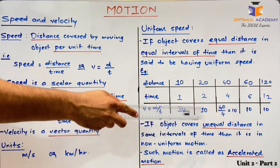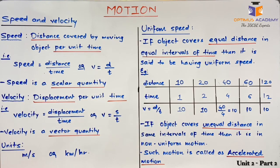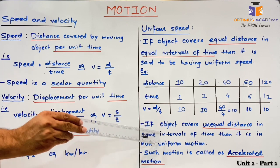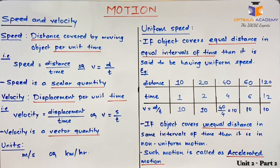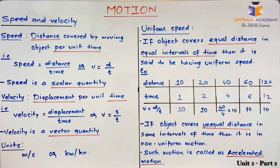If an object covers unequal distance in the same intervals of time, then the object is said to be moving with non-uniform speed. Please note that we can interchangeably use the words speed and velocity as we are only considering unidirectional motion. Since the object's direction is not changing, the values of distance and displacement will be the same, and so speed and velocity will also be the same.